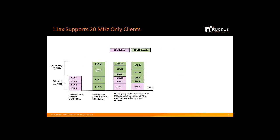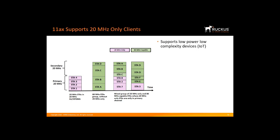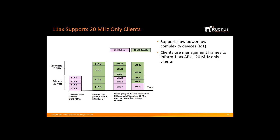Another feature of 11ax is that it supports 20 MHz only clients. 11ac required 80 MHz capable clients, whereas 11ax supports 20 MHz only clients because the 11ax draft amendment was written with IoT devices in mind — devices that are low cost, use little power, and have very small batteries. Using management frames, client stations will be able to inform an 11ax AP that they are operating as a 20 MHz only client.